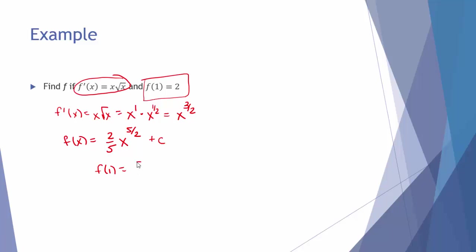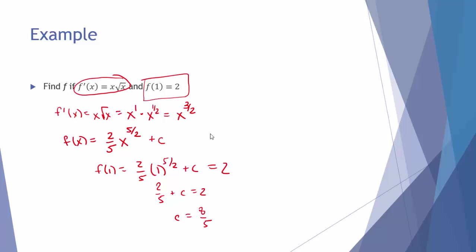Now use the condition f(1) = 2 to solve for C. Plugging in: 2/5 · 1^(5/2) + C = 2, so 2/5 + C = 2, giving C = 8/5. The only function that meets both conditions — its derivative is x^(3/2) and f(1) = 2 — is f(x) = 2/5 x^(5/2) + 8/5. When you see problems that give you a condition, that allows you to solve for the arbitrary constant.